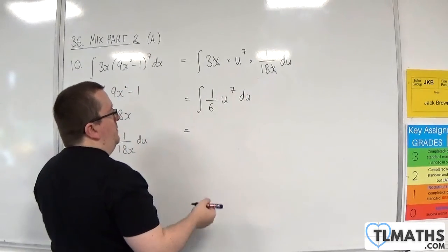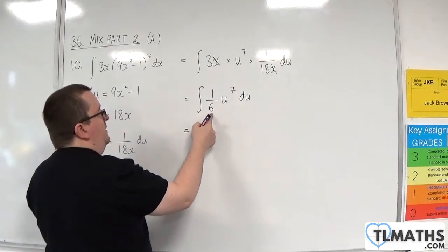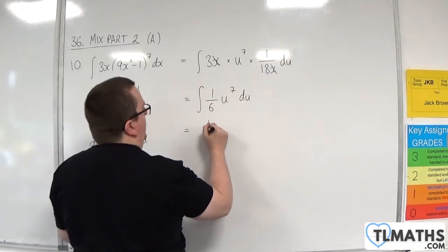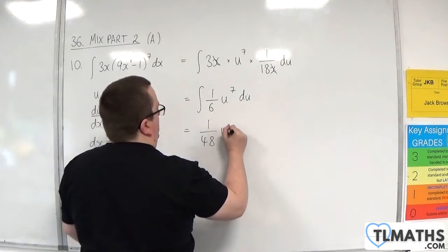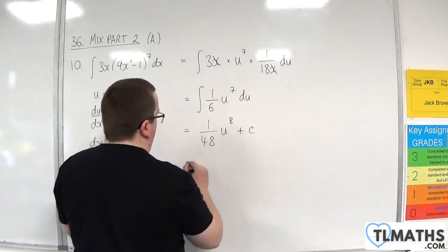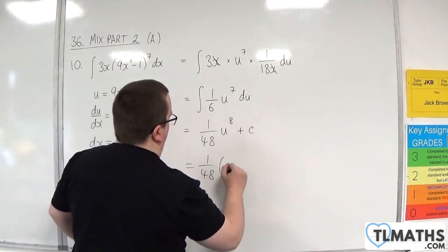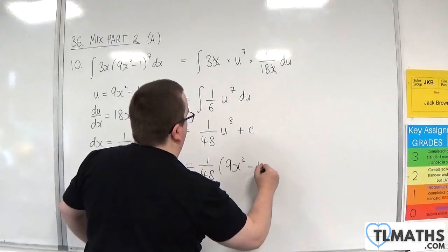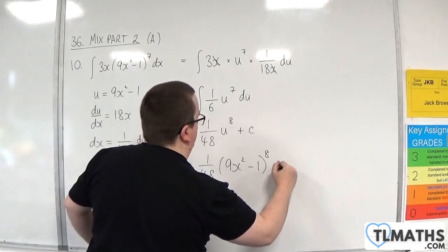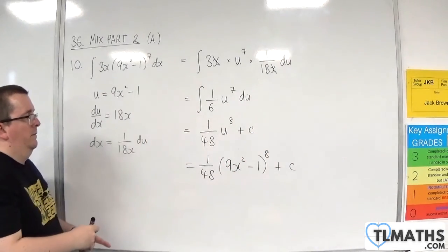Add 1 to the power, divide by the new power. So 1 over 6 divided by 8 is 1 over 48. u to the 8 plus c. And then put the substitution back in. So 1 over 48, 9x squared, take away 1 to the 8 plus c. And we're done.